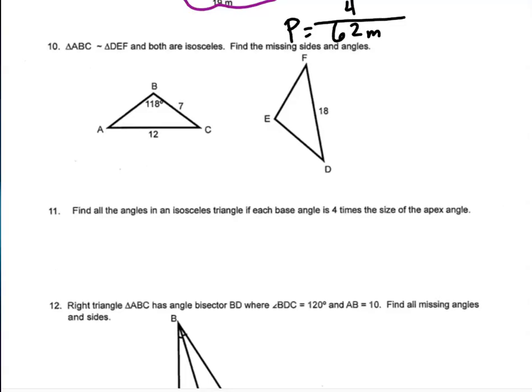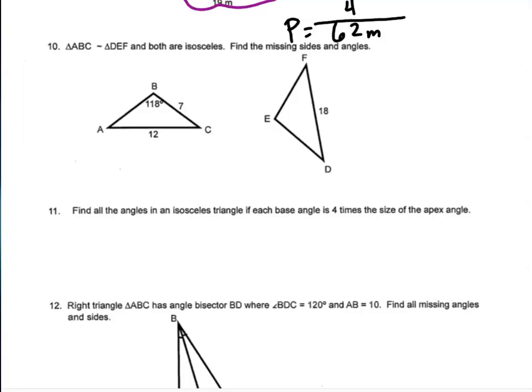Question 10: triangle ABC is similar (using the similarity notation) to triangle DEF, and both are isosceles. In the first triangle, 118 degrees must be the unique angle since two angles of 118 would exceed 180. The two base angles are equal, so each equals (180 − 118) ÷ 2 = 31 degrees. The missing side equals 7 (matching the other equal side of the isosceles triangle).